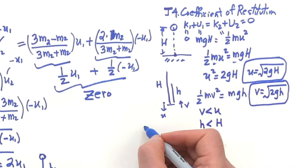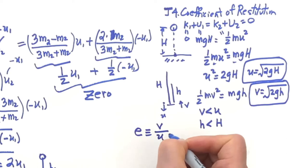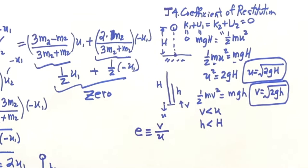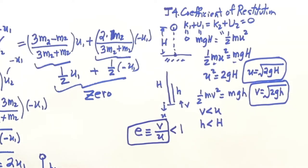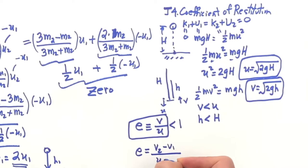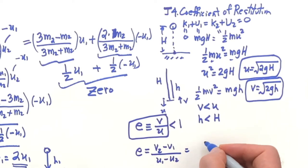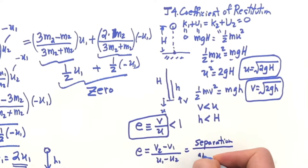So the coefficient of restitution is defined — by definition, using a little e — as the velocity after the bounce compared to the velocity before the bounce. This ratio is going to be less than one; you're not going to be able to get a perfect bounce. This formula can be generalized to collisions where both masses are moving, and in that case the formula is the ratio of the velocity of separation over the velocity of approach.